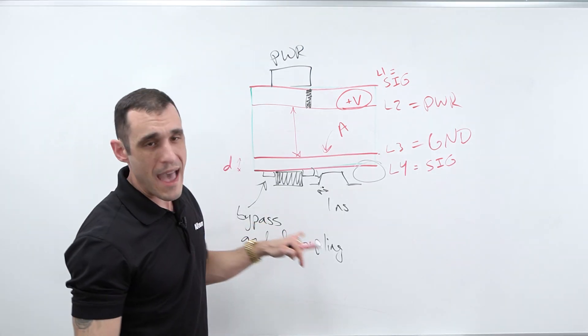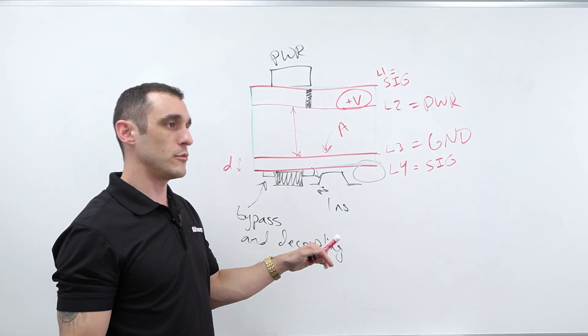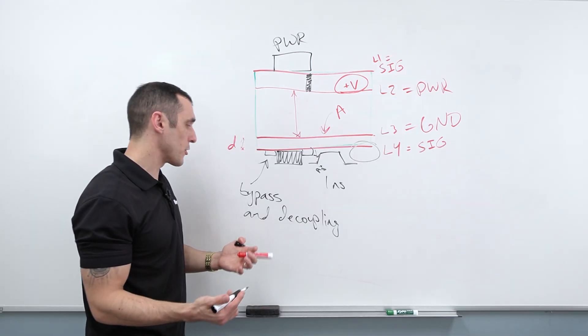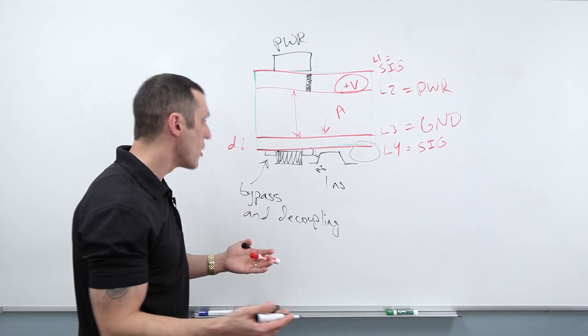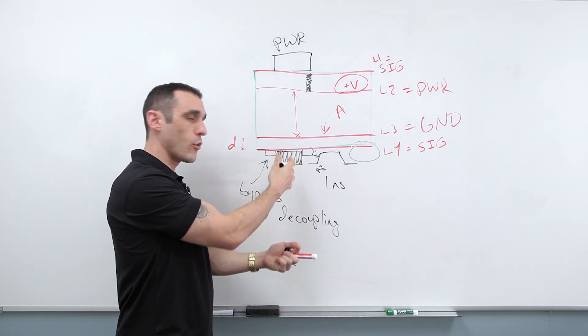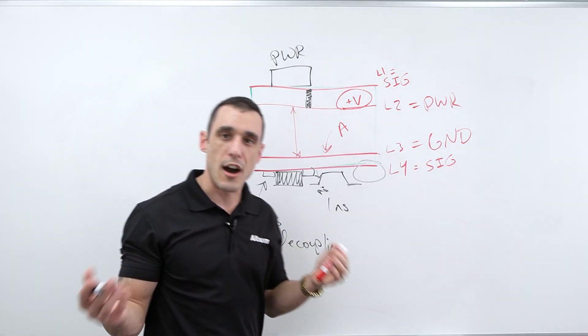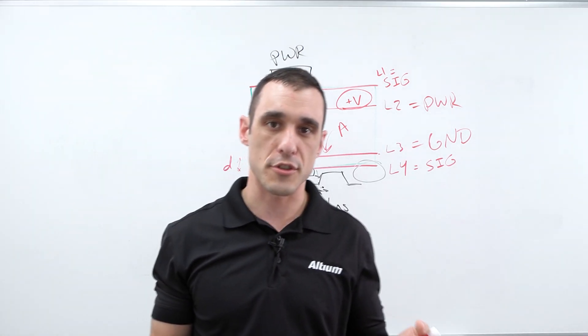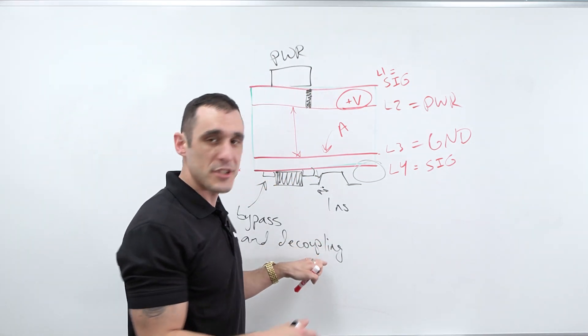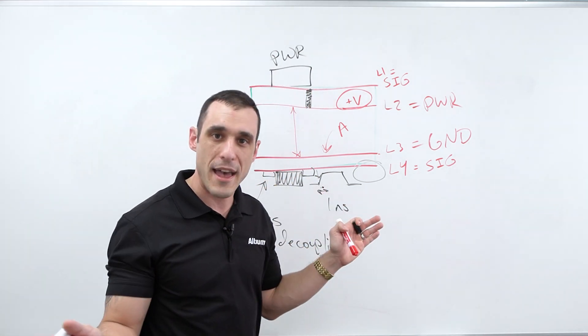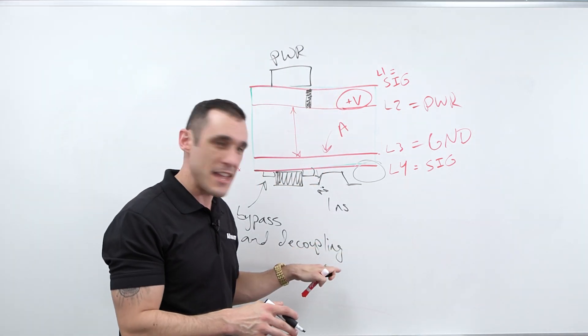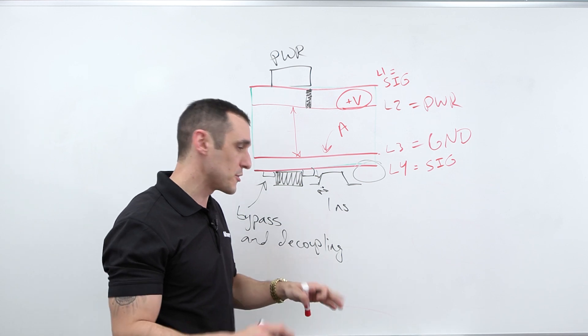So the words bypass and decoupling do not refer to like a specific type or brand or anything of capacitor. It just refers to the function that they perform when they're placed into the power distribution network for a component. So if you go on to like Octopart or you go on to another part search service and you start searching for like decoupling capacitor, don't be surprised if you find just a bunch of random capacitors, because there isn't like a specific type of capacitor that anyone brands as a decoupling capacitor. So just keep that in mind.